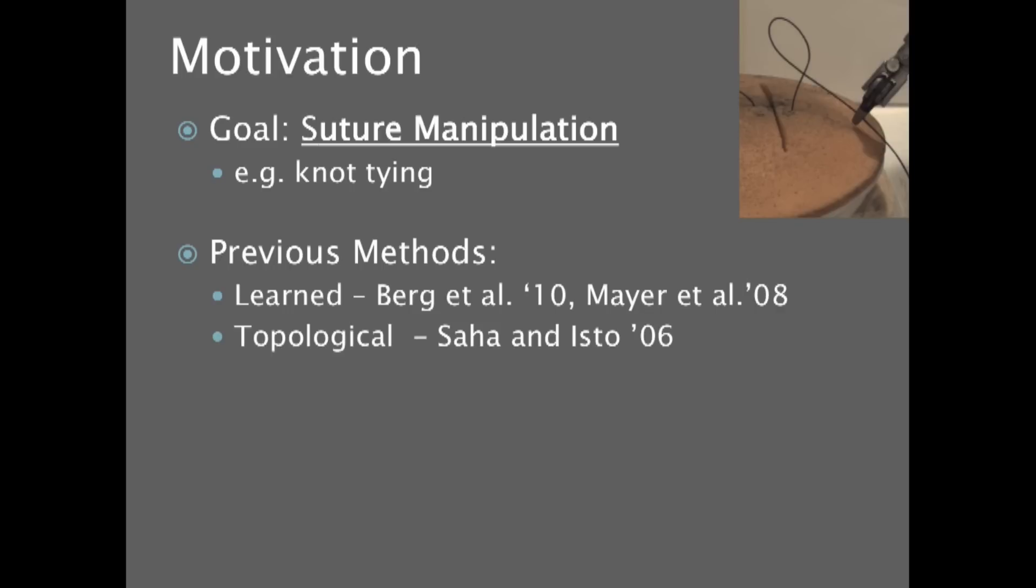In the past, people have approached this problem from two specific approaches. First, a learning-from-demonstration approach, where the motions of the robotic end effectors are learned from multiple demonstrations. And secondly, motion planning and topological state, where you actually attempt to plan the topological state of the knot that you're trying to tie.